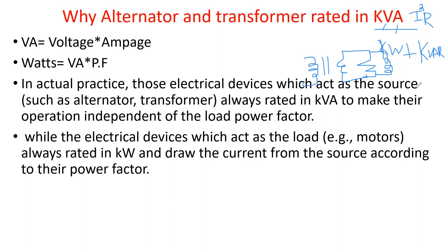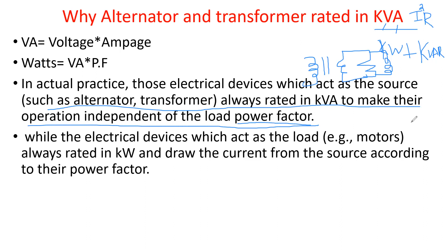In actual practice, electrical devices that act as sources — such as alternators and transformers — are always rated in KVA to make their operation independent of the load power factor, since power factor varies with the connected load. Devices that act as loads, like motors, are rated in KW because they represent mechanical power output and draw current from the source according to their power factor.